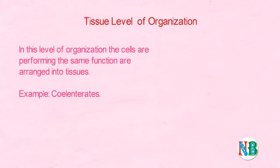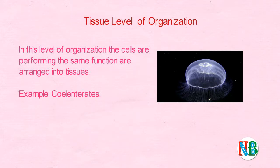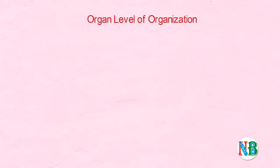Let us take the tissue level of organization. In this level of organization, cells performing the same function are arranged into tissues. Example: Coelenterates.